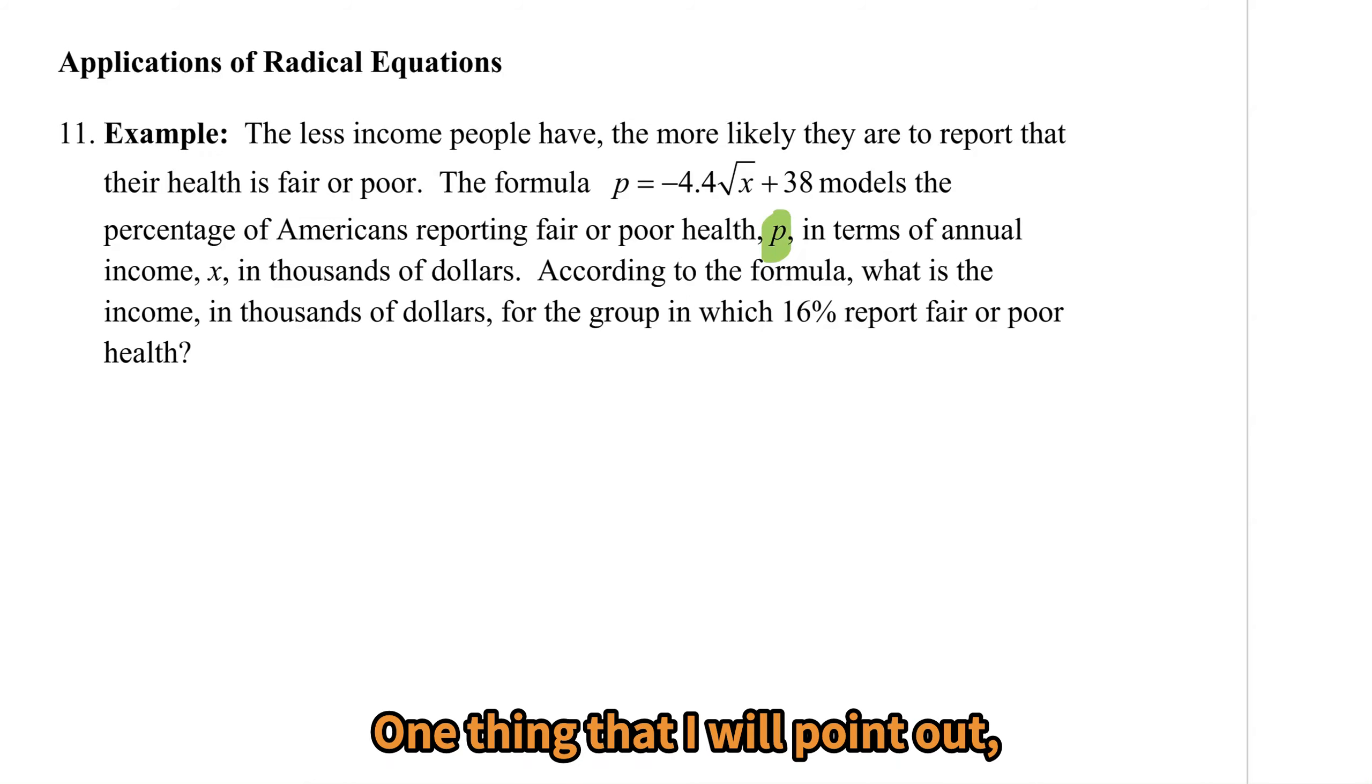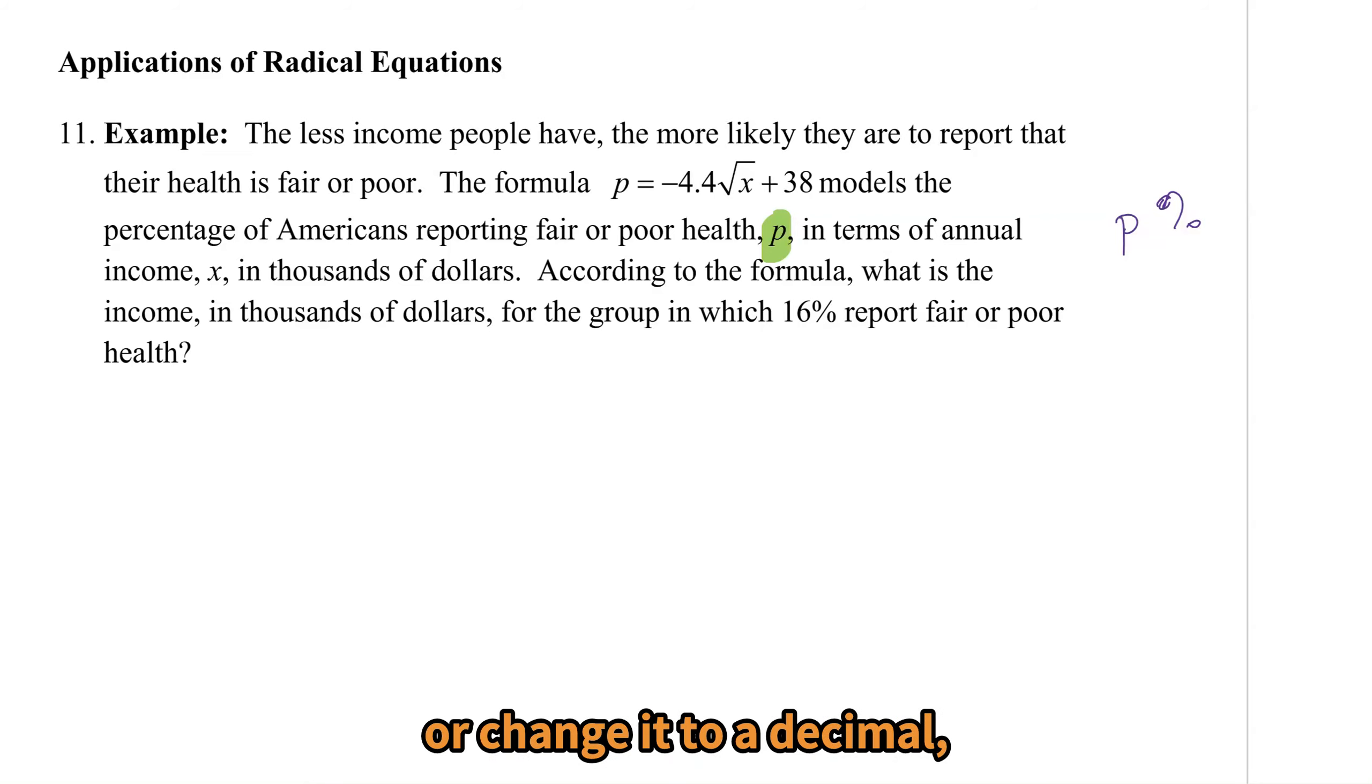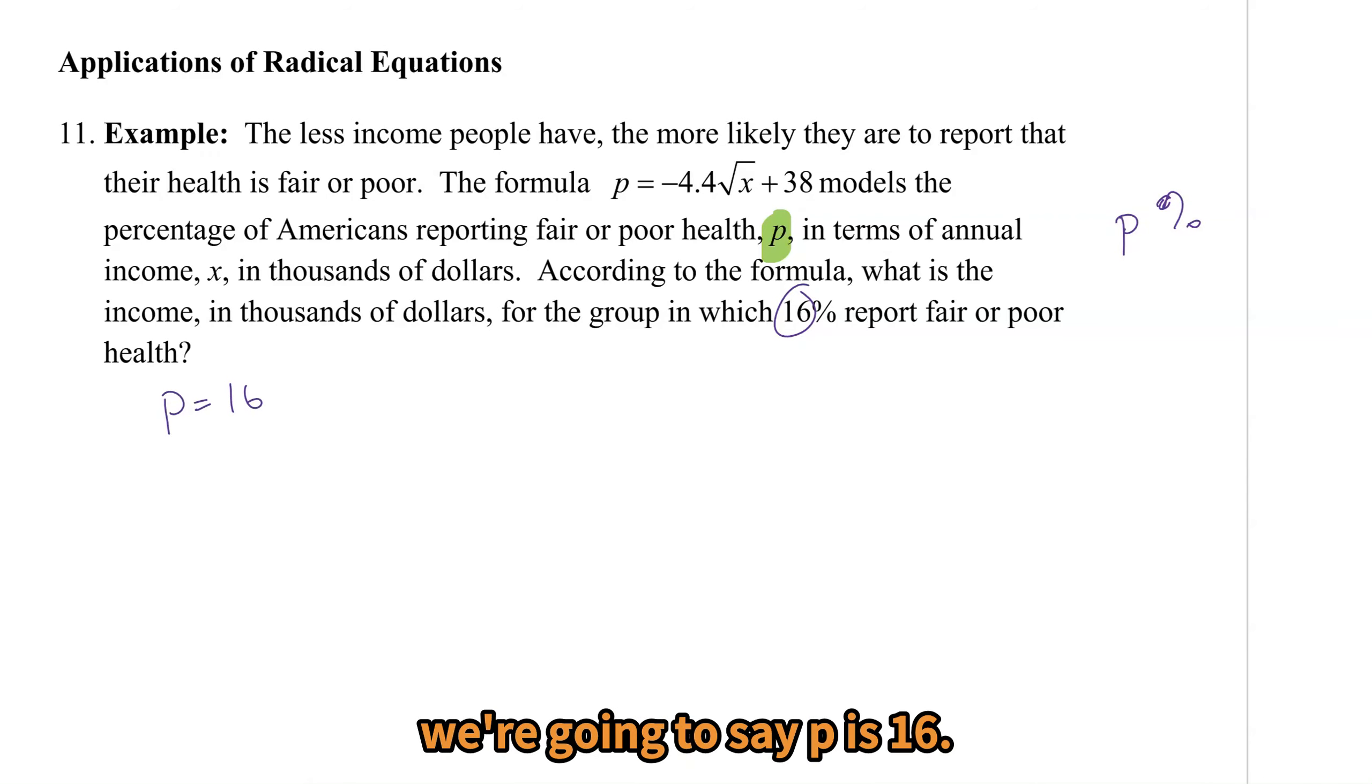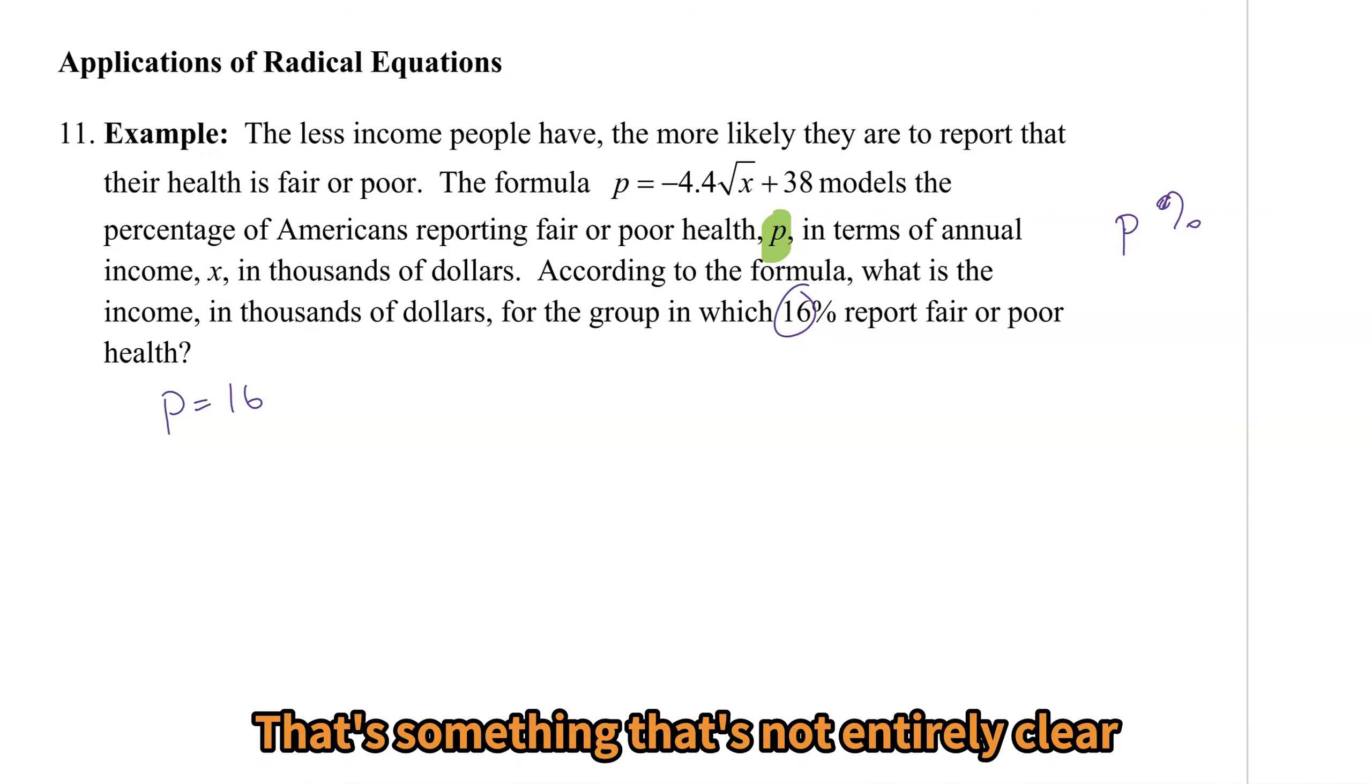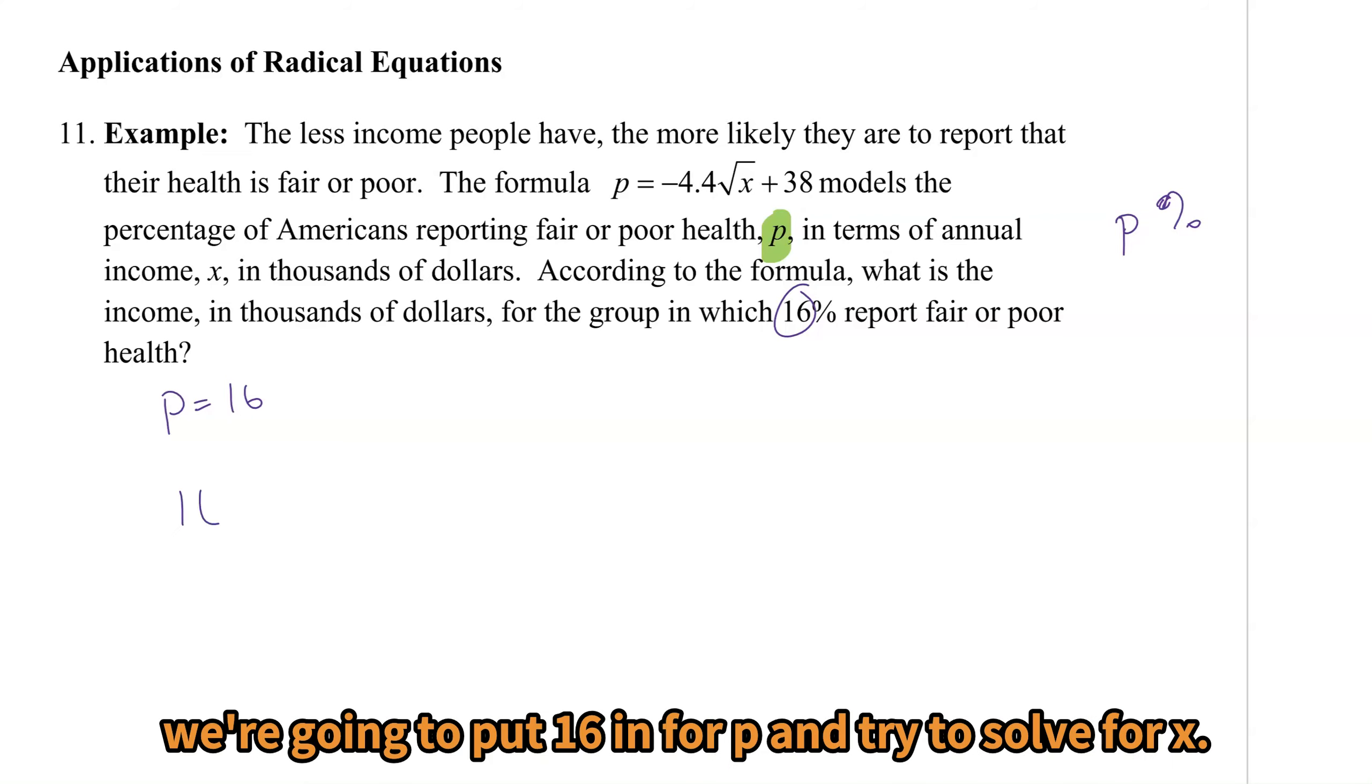One thing that I will point out, that percentage p is p%, meaning that we're not going to move the decimal or change it to a decimal. We're going to use the percent number. So here's 16% reporting fair or poor health. We're going to say p is 16. That's something that's not entirely clear from the context of the problem, so I'm pointing that out for you knowing what's coming. The idea here is we're going to put 16 in for p and try to solve for x.